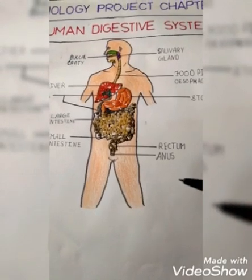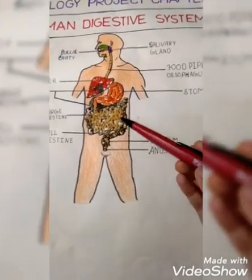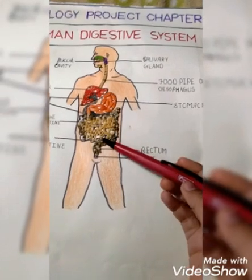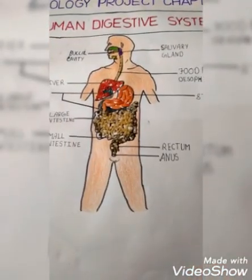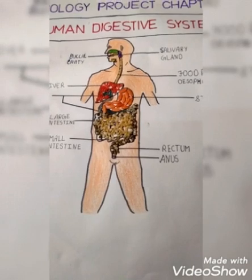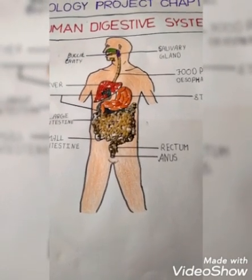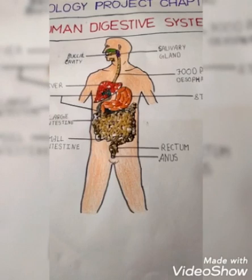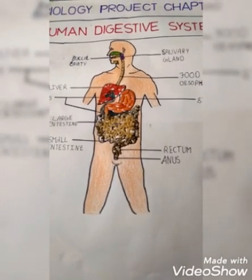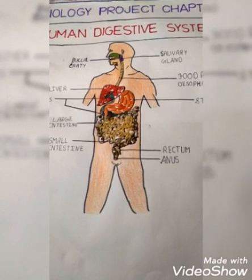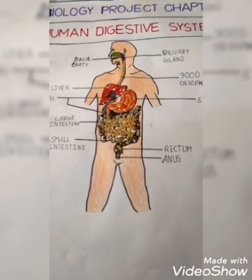The large intestine is wider and shorter than the small intestine. It absorbs water from the undigested food. The leftover waste part goes to the rectum, where it is stored as fecal matter. The feces are then eliminated through the anus. This entire process of taking in food and excreting waste is known as egestion.